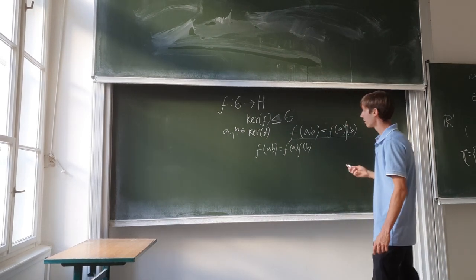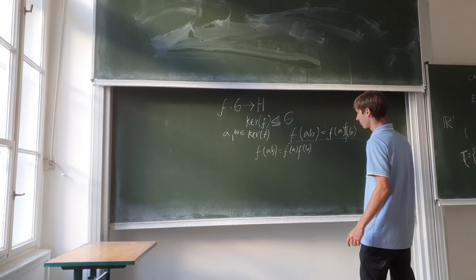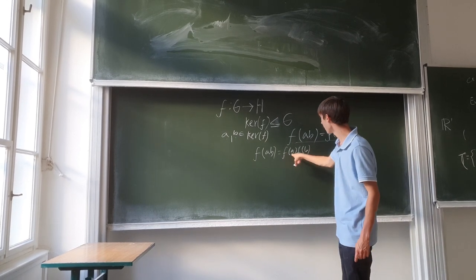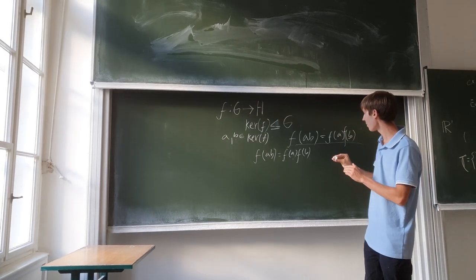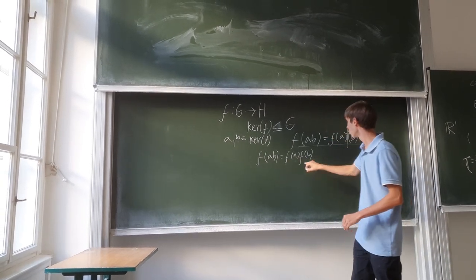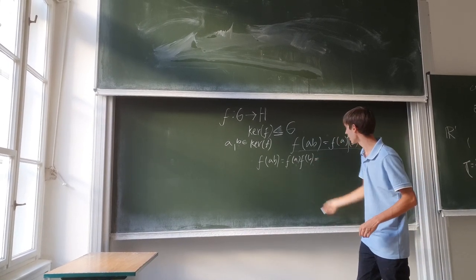That means that a and b both have to be mapped to the same result. If we have f(a) and f(b), we're talking about the kernel of f, the elements which map to the identity of the group H.